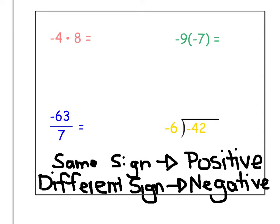So looking at these examples: negative 4 times 8 — opposite signs, so my answer is going to be negative, and 4 times 8 is 32, so negative 32. Negative 9 times negative 7 — same sign, so my answer is positive, and 9 times 7 is 63, so positive 63. Negative 63 divided by 7 — different signs, so negative, and that would be negative 9. Negative 42 divided by negative 6 — same sign, so positive, and my answer is positive 7.